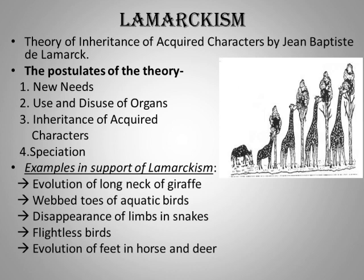Another example is the disappearance of limbs in snakes like pythons and boas. According to Lamarck, ancestors of snakes were lizard-like. They lived in thick jungles and out of fear of mammals started creeping, which was faster on the forest floor. For creeping and burrowing, they stretched their body, which gradually became elongated. The small limbs became an obstruction to their movement pattern and finally slowly disappeared.